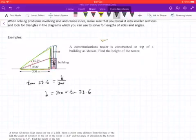We have 200 times tan 23.6 is equal to 87.3778 dot dot dot, so we're going to say that's 87.38.